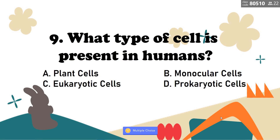Number 9: What type of cell is present in humans? A, plant cells; B, monocular cells; C, eukaryotic cells; D, prokaryotic cells. Very good — and that is letter C, eukaryotic cells.